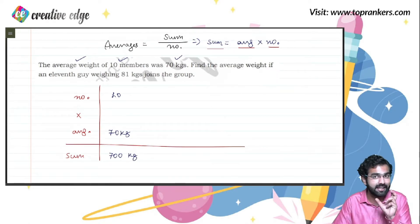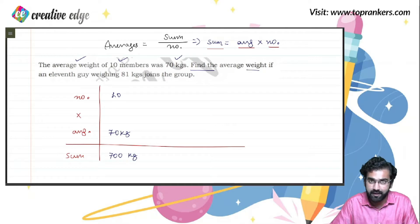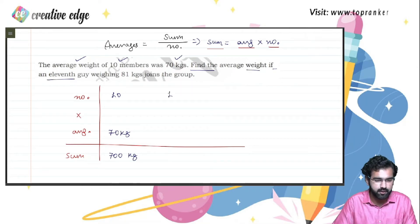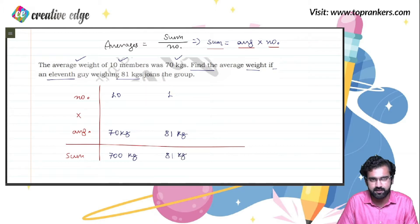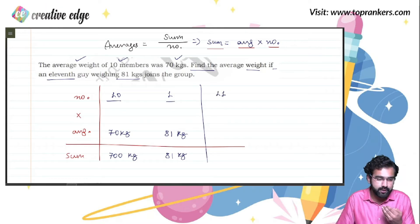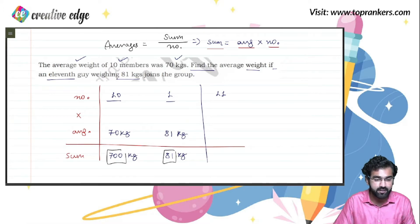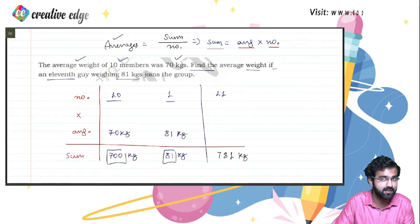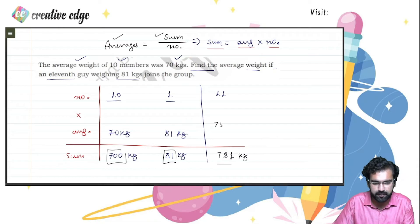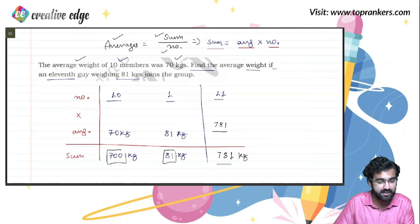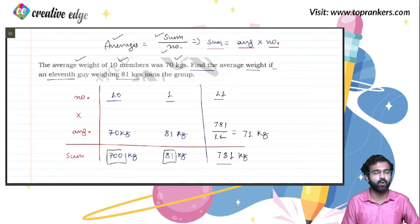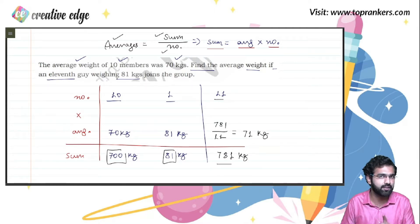Now, an 11th guy joins the group and he weighs 81 kgs. When this 11th guy joins, there are now 11 people in the group. The total weight becomes 700 plus 81, which is 781. Using the average formula: 781 divided by 11 gives us 71 kg. So the average weight increased by one.